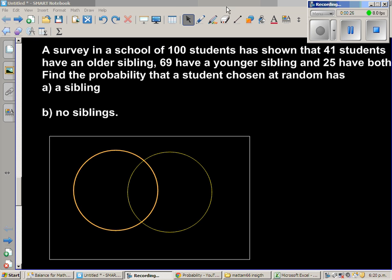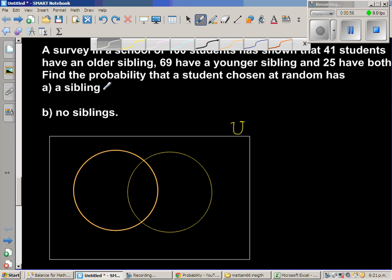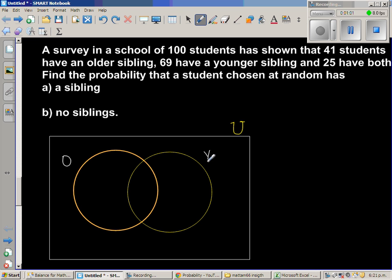The rectangle is called the universal set or the sample space. Let us call that U or you can call that S. This is the sample space and you have got two sets: one is a set of students who have older sibling and a set of students who have younger sibling. Let us call the set of students with older sibling as O. This is the older sibling and this is Y for younger sibling.